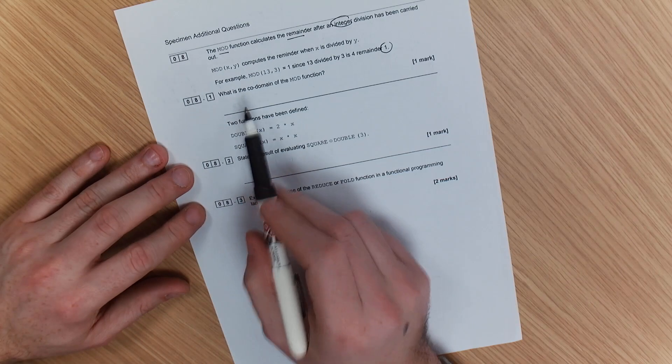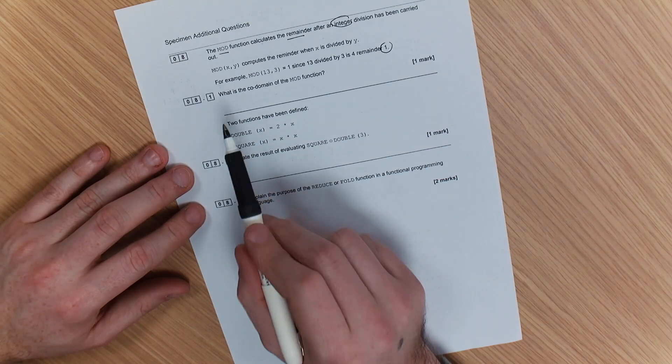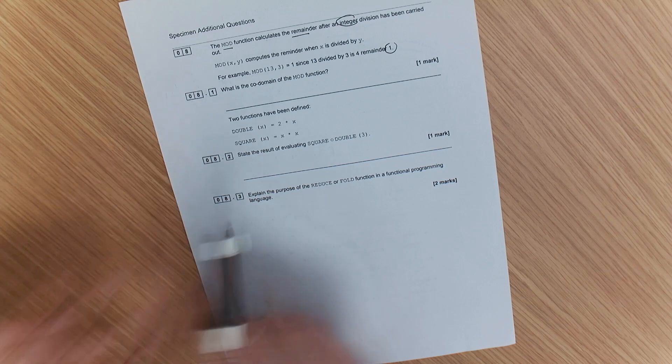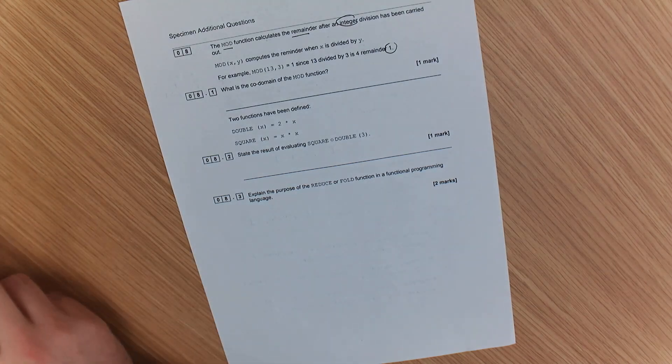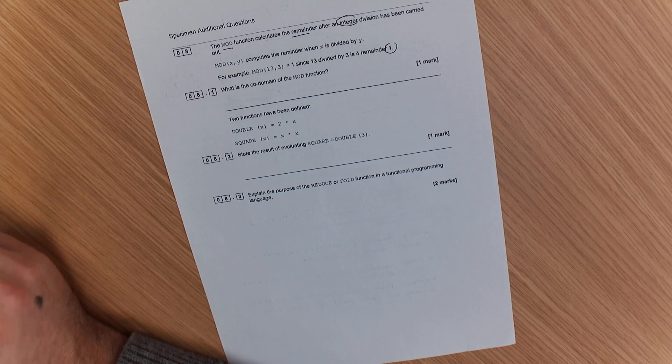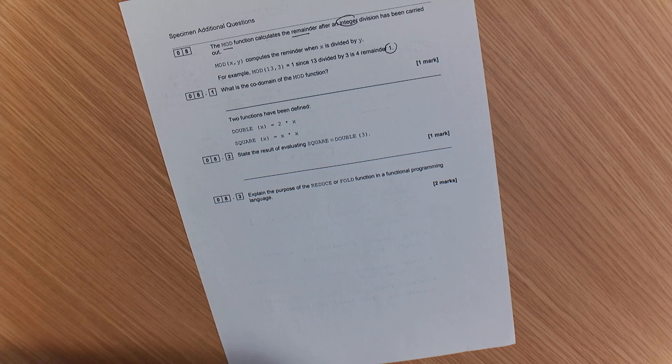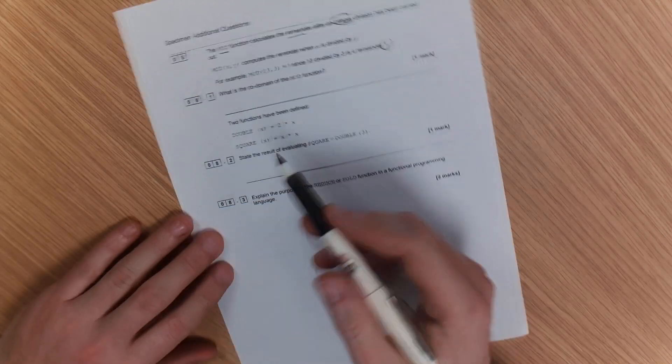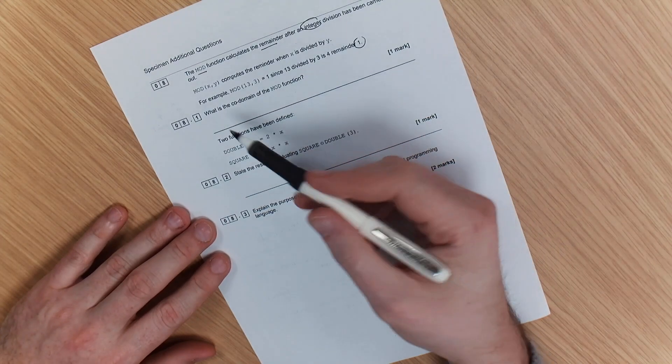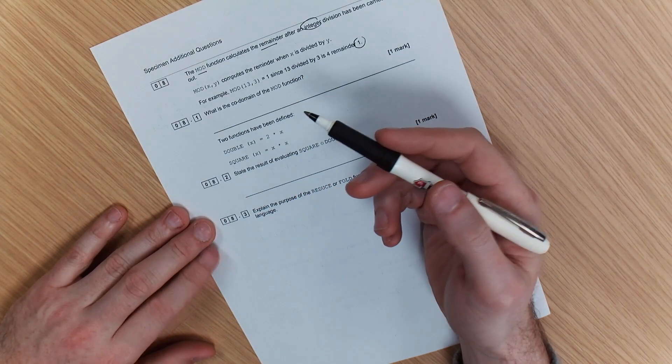What it's asking here is what the co-domain of the mod function is. Now, don't make a point of writing down the actual answer, such as 1, because that's a common mistake. What it's actually asking you about is for you to make sure that you know the difference between a domain and a co-domain. Now, remember,